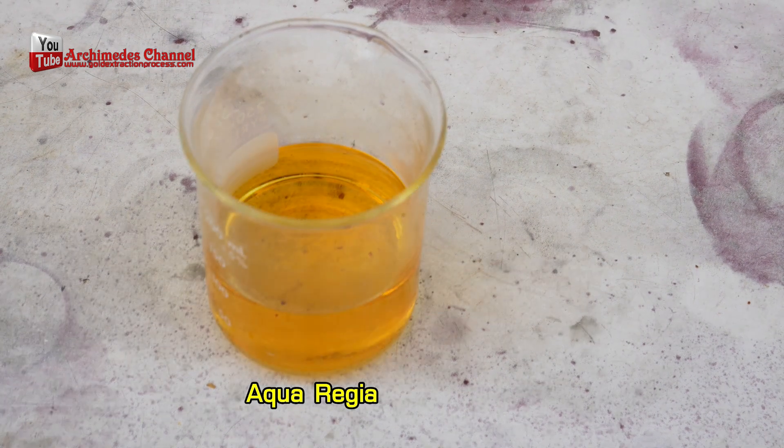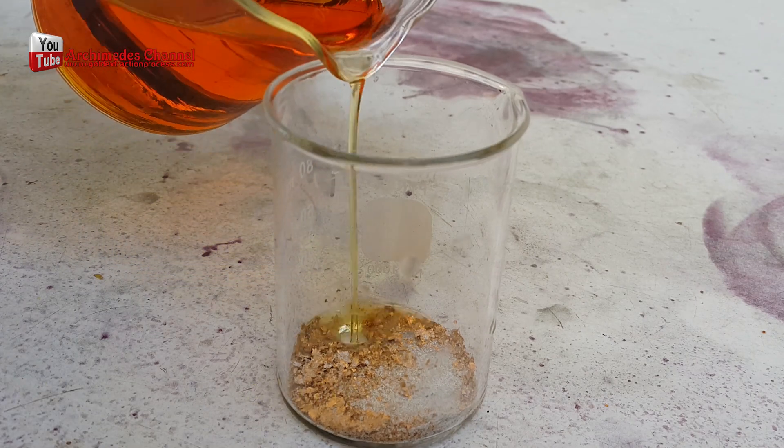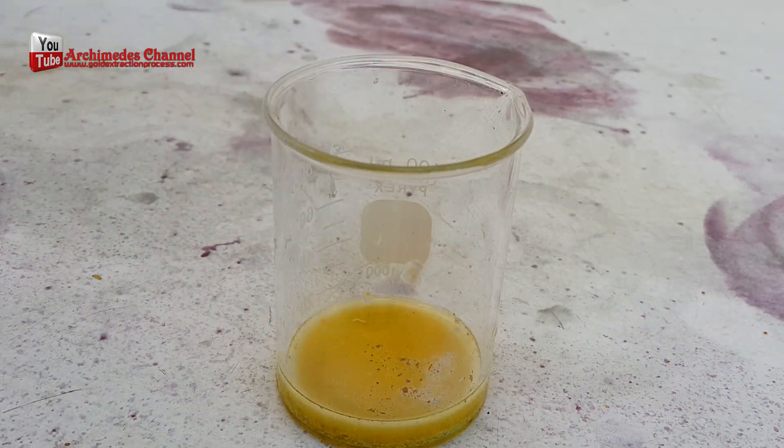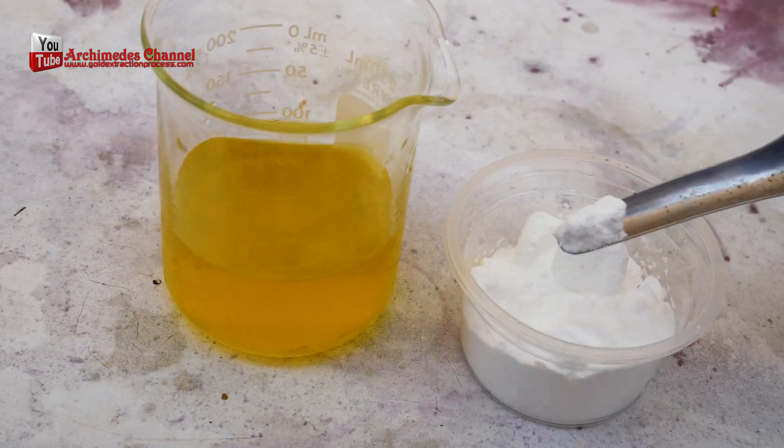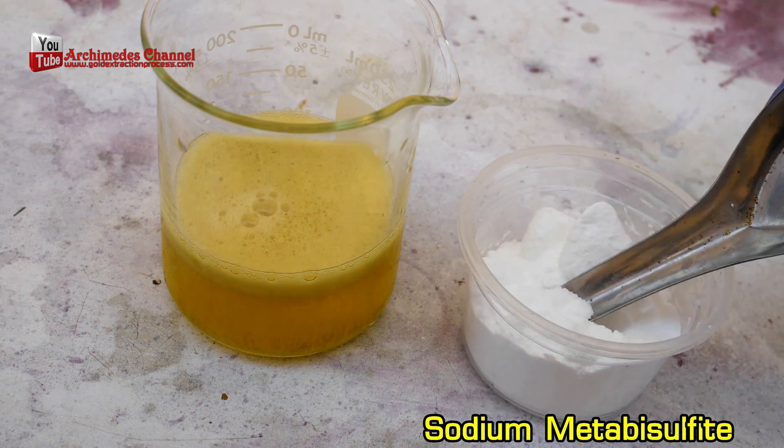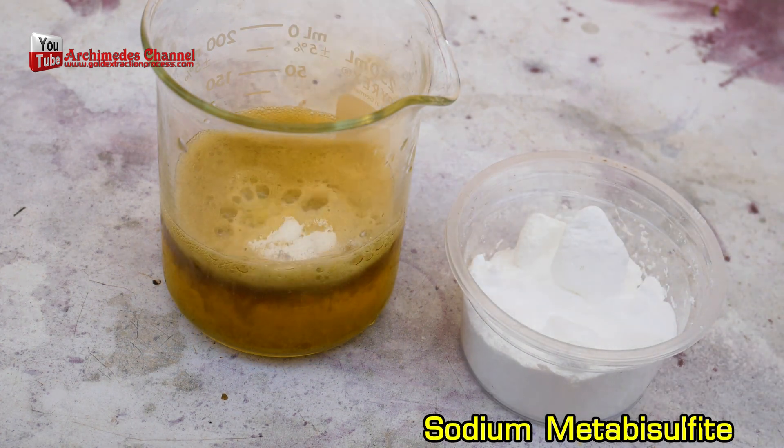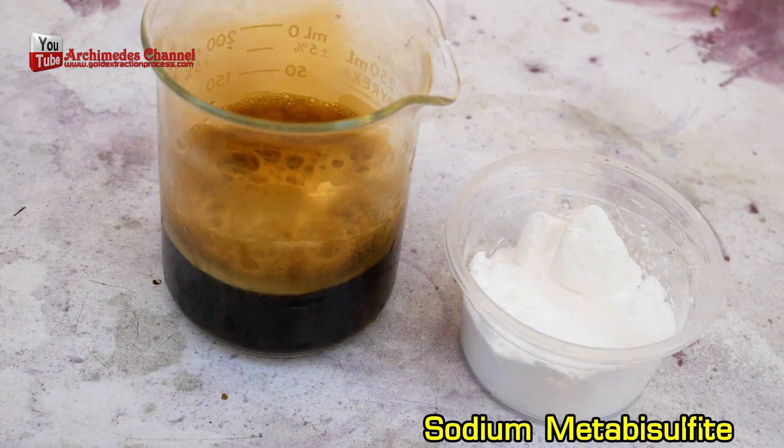Using sodium metabisulfite, I managed to get the gold to settle as sediment at the bottom of the aqua regia solution. I slowly poured the sodium metabisulfite in until reaching saturation level or until the sodium metabisulfite stopped dissolving. At this point, the brown sediment of gold could be seen.